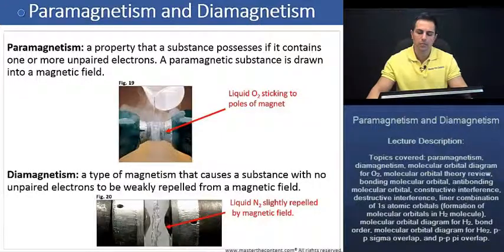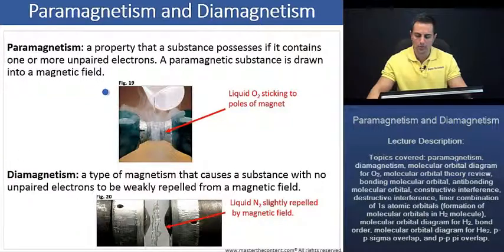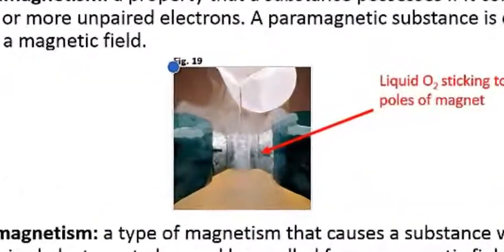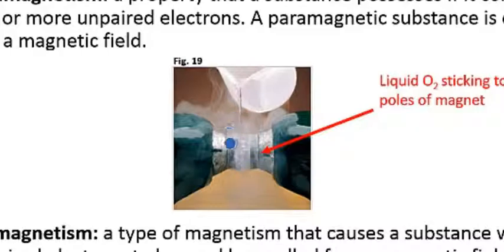Now we'll shift our attention towards paramagnetism and diamagnetism. Let's take a look at figure 19 first and really understand what's taking place here. When we have liquid oxygen and we pour it over the poles of a strong magnet, it's going to stick to the poles of that magnet.